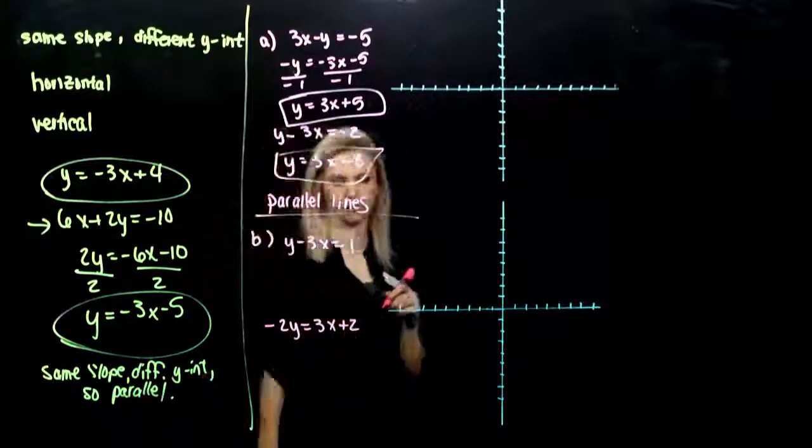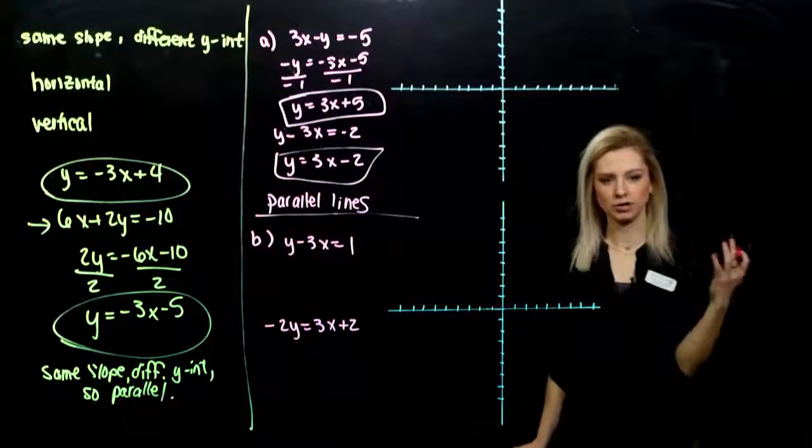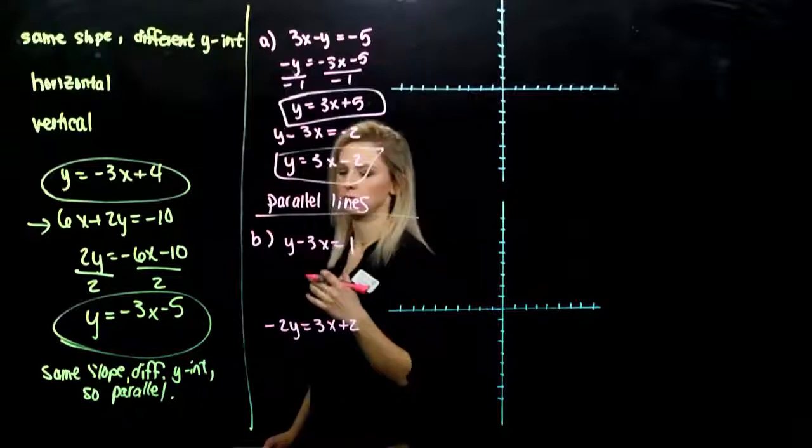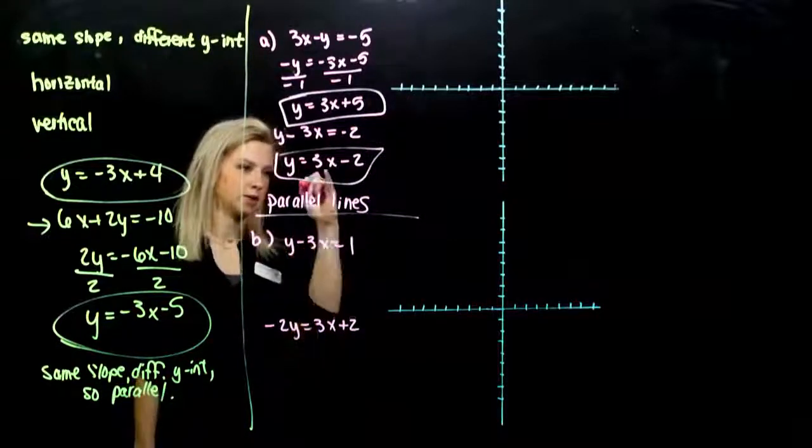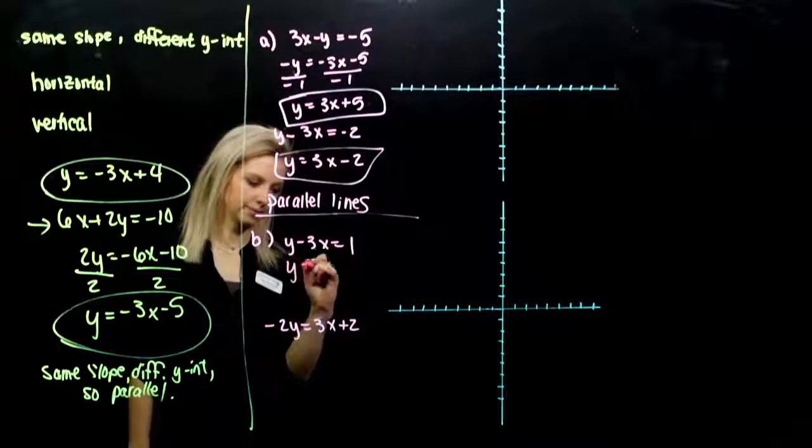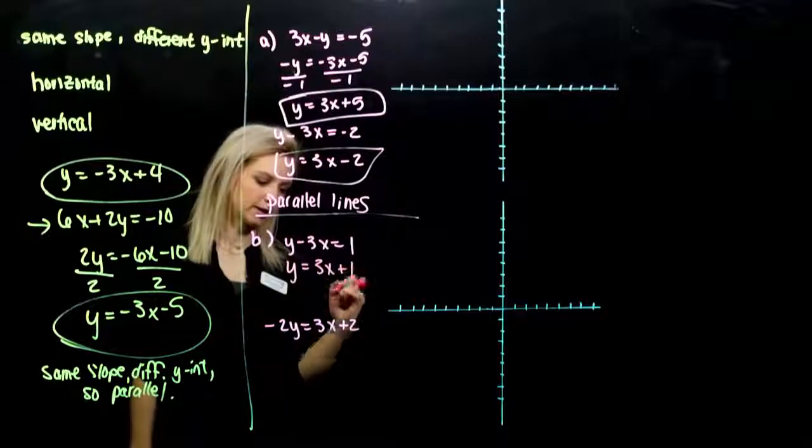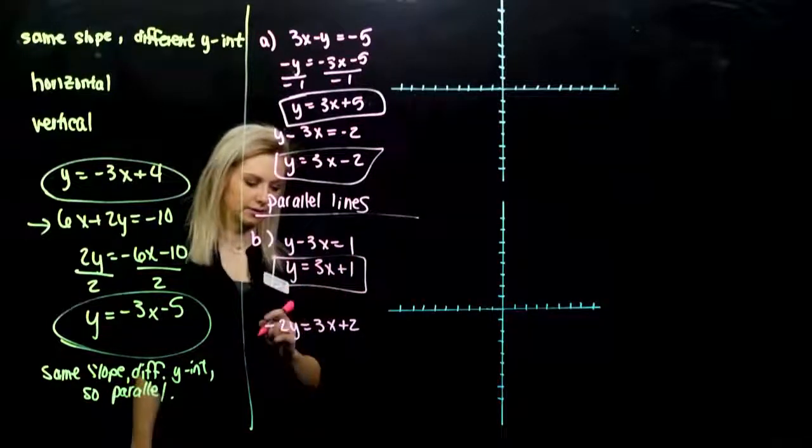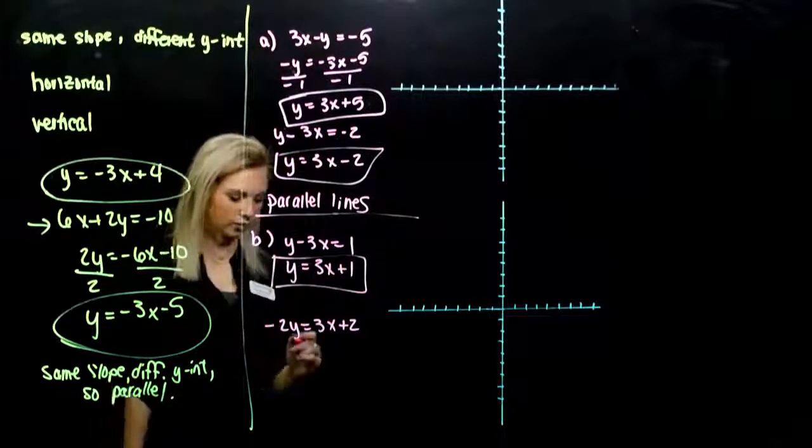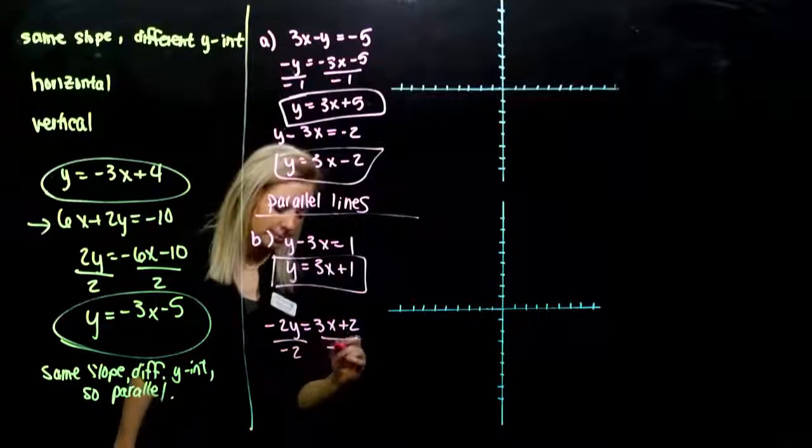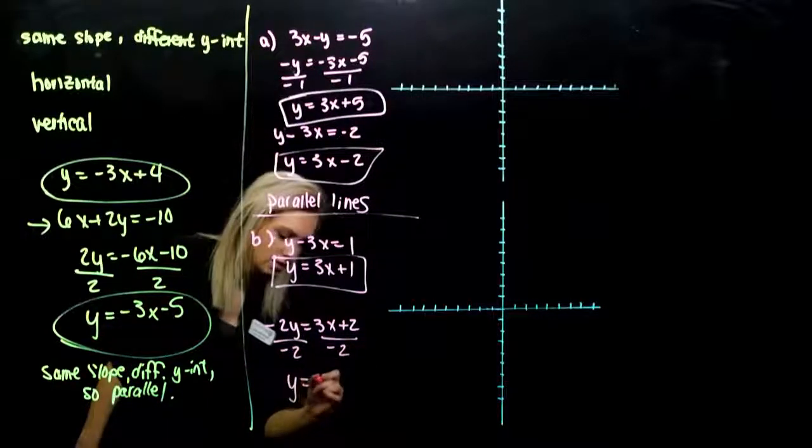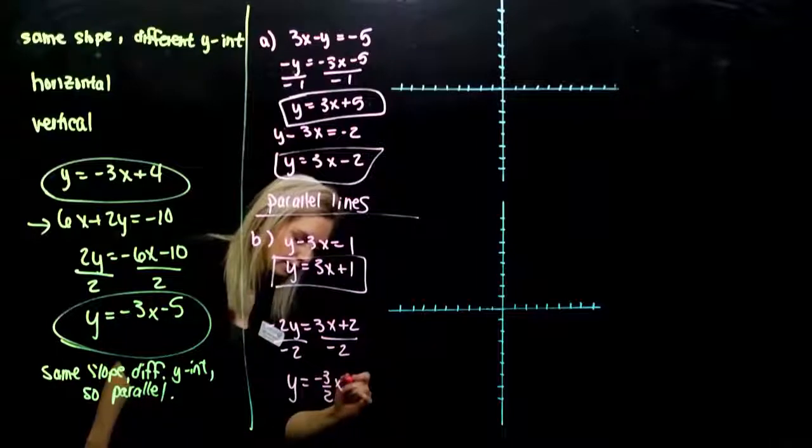Good. Pretty straightforward. With the second one, we want to do the same. Solve for that y equals mx plus b form. So we've basically dealt with this case. Add 3x to both sides. So that one is isolated for y. This one, we have to divide both sides by minus 2. So y is minus 3 halves x minus 1.